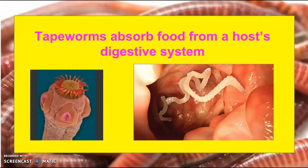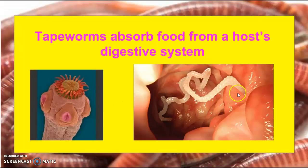Tapeworms are a very common flatworm that animals get a lot, and humans can get them too. The way tapeworms work is they absorb food from a host's digestive system. Here is the mouth, and when the tapeworm gets into the gut area it attaches to the intestine wall and sucks out the nutrients as they come through.